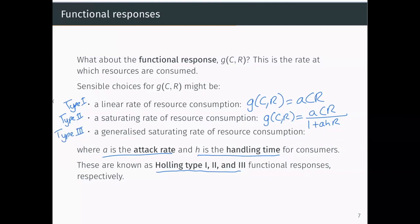And then type three response is where our functional response G is A times C times R to the power of K over one plus AH times R to the power of K, where K is greater than one. So this one's a little bit harder to describe — essentially a generalization of type two.